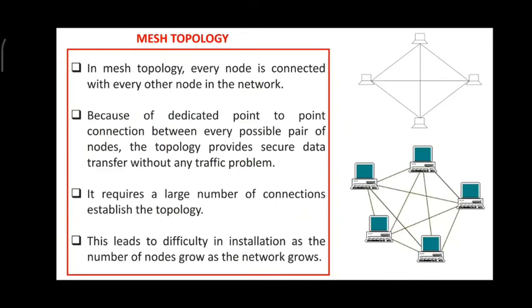Next is mesh topology. In the picture, four computers are connected to one another with wires, and in the lower picture, five computers are all connected to one another with cable. More cable is needed so that the first computer can communicate directly to the fifth, fourth, or third computer. In ring topology that is not possible, because data must travel sequentially — 1 to 2, then 3, then 4 — but in mesh topology any computer can connect to any other computer directly.